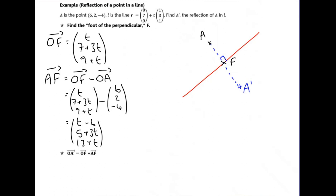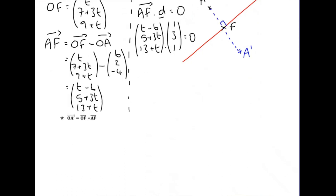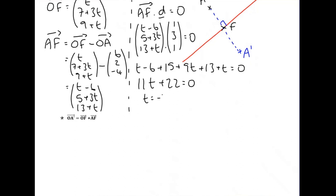Once we've got AF, we need to work out T. We know AF is perpendicular to the line, so if we do the dot product of AF with the direction vector of the line we should get zero. So (T minus 6, five plus three·T, thirteen plus T) dotted with direction vector (1, 3, 1) equals zero. That gives: (T minus 6)·1 + (5 plus 3T)·3 + (13 plus T)·1 = 0. Collecting T's gives eleven·T, collecting numbers gives nine plus twenty-two, so eleven·T + 31 = 0... giving T equals minus two.